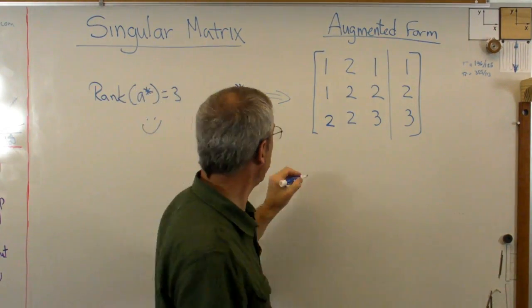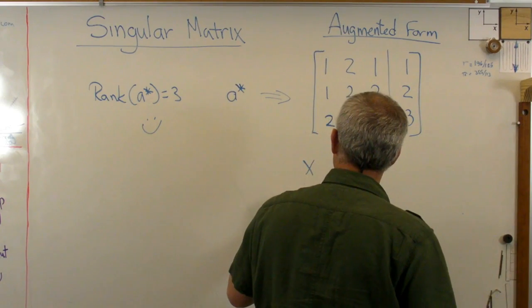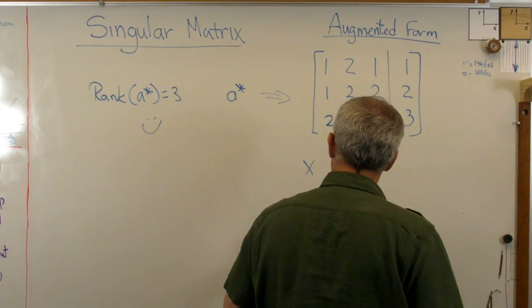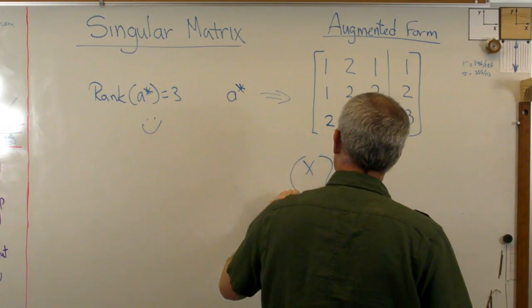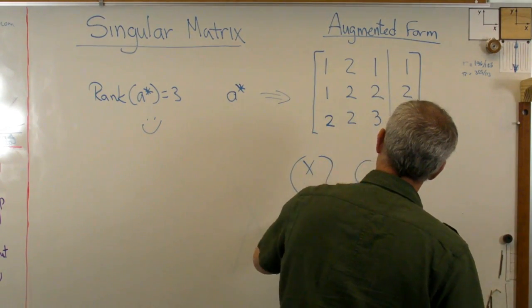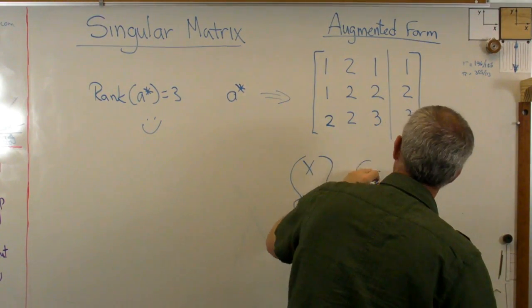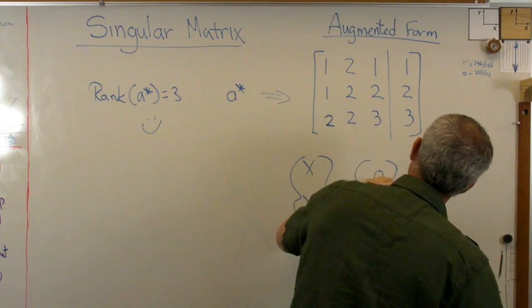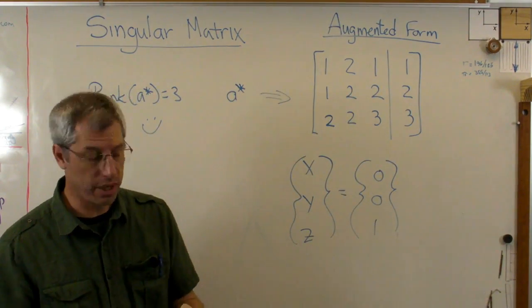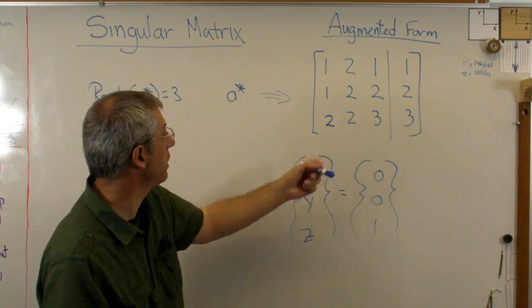Now I know I can invert it. And just in case you want to know here, my vector, my solution vector looked like this. And it was zero, zero, one. Maybe not a very interesting answer, but it's an answer. I was able to invert this now.